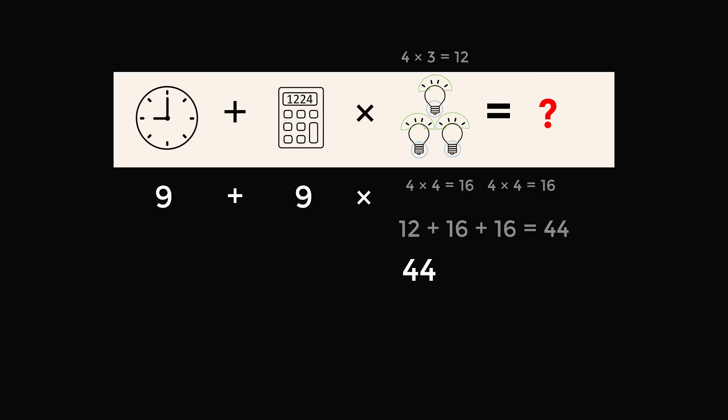So we are almost ready to solve the problem. We have 9 plus 9 times 44. Remember, we have the order of operations, so we have to do multiplication first. 9 times 44 is equal to 396. Finally, we have 9 plus 396, and that gives us an answer of 405. And that's what I believe the correct answer is.